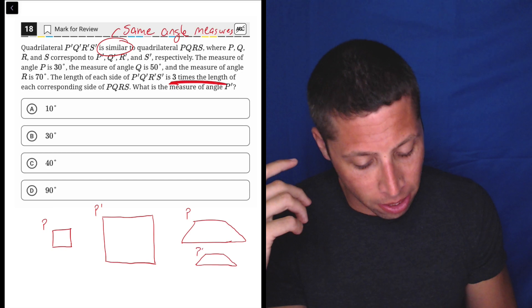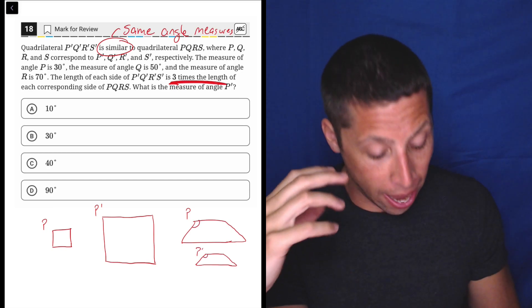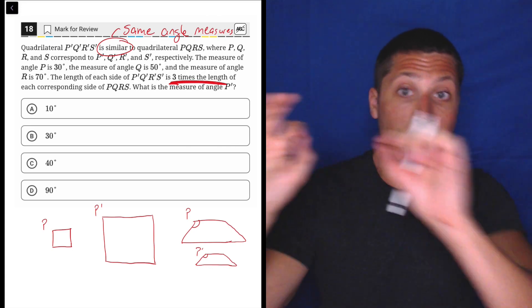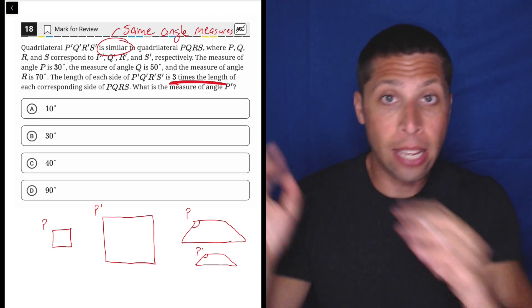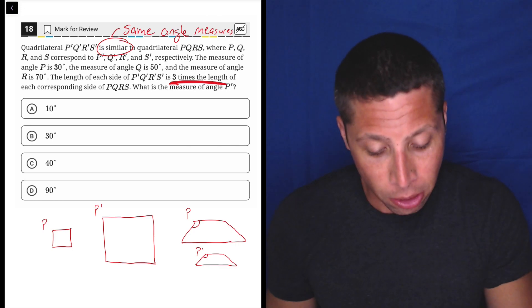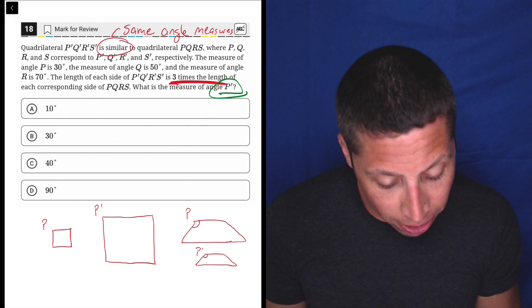Then this angle and this angle are the same. And that would be true of the Qs and the Rs and the Ss. Basically, every corresponding angle is going to match up the same. The side lengths will be different, but the angle measures are going to be the same.